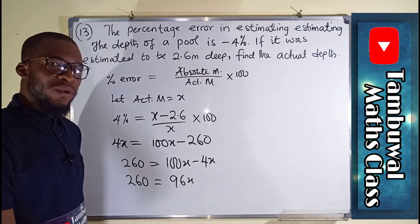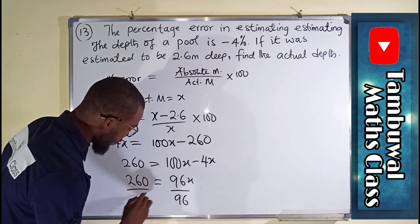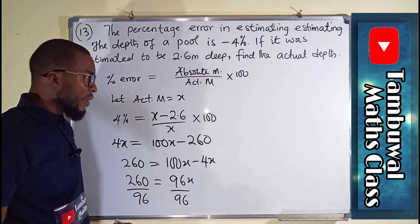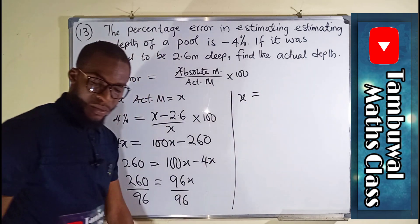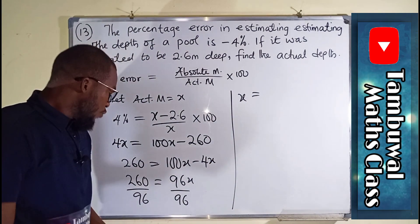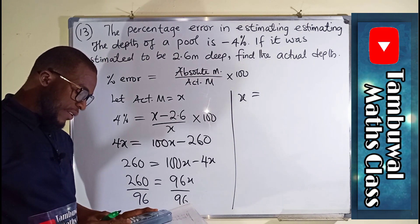260 will now be equal to 96x. But what we are looking for is the x. So we can divide both sides by 96 to leave x alone. So finally, x equals 260 divided by 96.